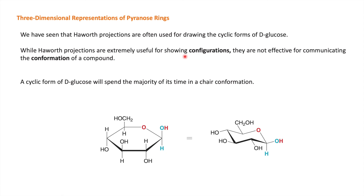So far we have studied pyranose and given the Haworth projection. Haworth projections are good for showing configuration, but they are not effective for showing the conformation of the compound. In the Haworth projection, hydroxyl groups are simply represented as upward or downward. But actually D-glucose exists in chair form in space, where hydroxyl groups can be in equatorial or axial positions. This is the correct way to represent D-glucose.